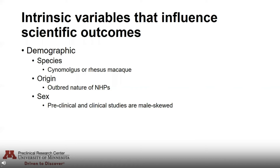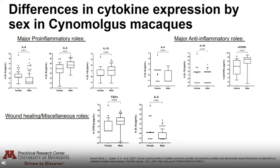One of the most important things to think about is the sex of your animals and having a balanced cohort, if at all possible. Both preclinical and clinical studies have historically been male-skewed, which has had a negative impact on our interpretation of many diseases and therapies. To illustrate this, we looked at differences in cytokine expression in cynomolgus macaques between males and females. Many pro-inflammatory cytokines showed significant differences between the sexes, including IL-6, IL-8, and IL-15, as well as major anti-inflammatory cytokines such as IL-4, IL-10, and CD40 ligand, and cytokines involved in wound healing such as TGF-alpha and IL-5.